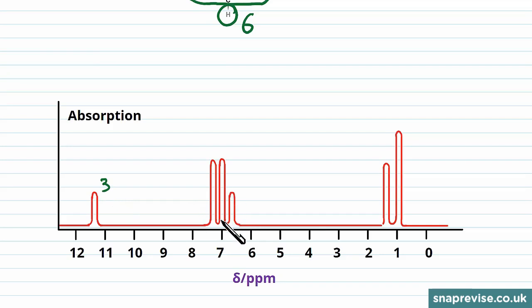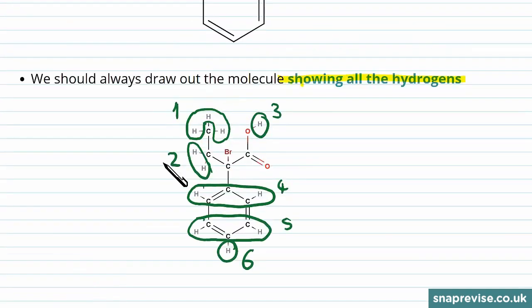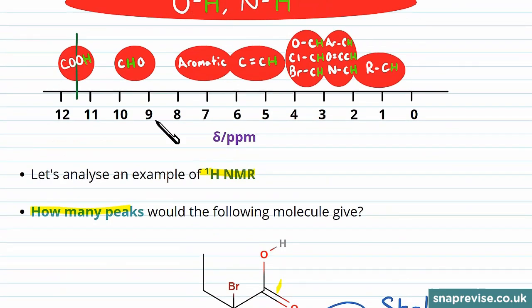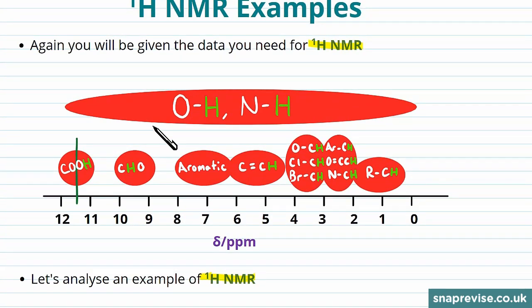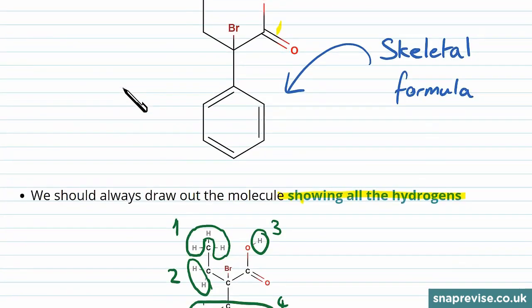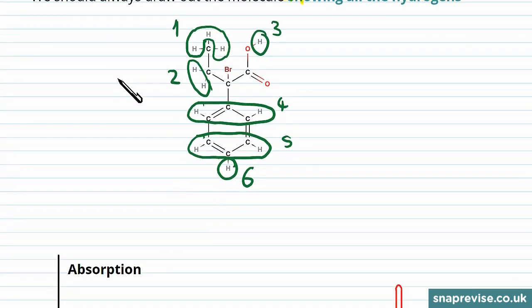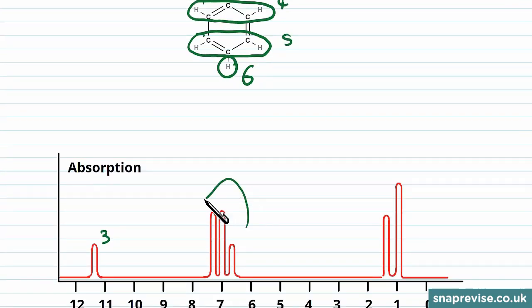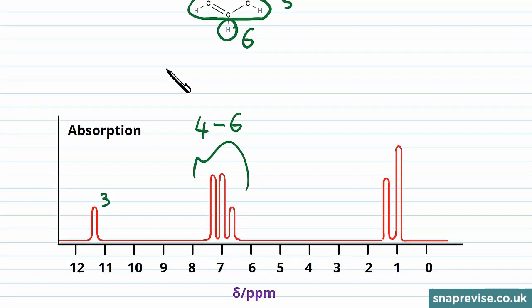Next, we have three peaks around about seven on the chemical shift. So looking back to our data, we can see that round about seven is going to be the aromatic hydrogens, which is what we'd expect because we do in fact have an aromatic ring. So these three peaks correspond to environments four through to six. We'll assign these more individually, which one is four, five and six, in a minute.